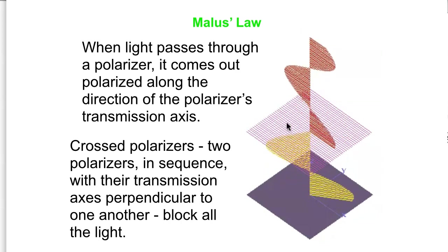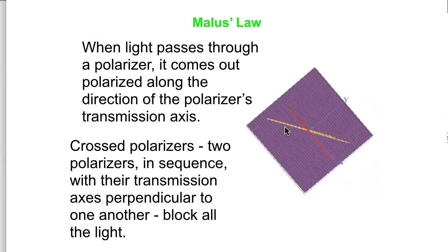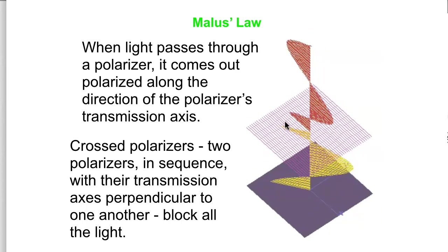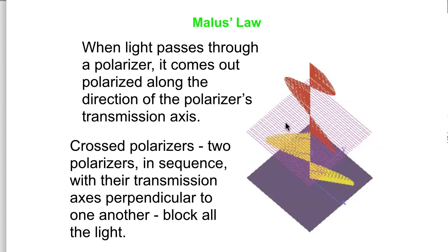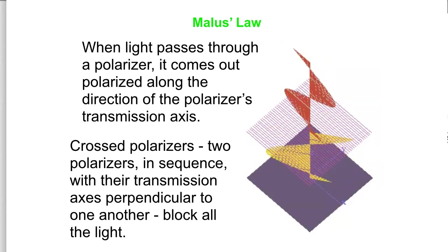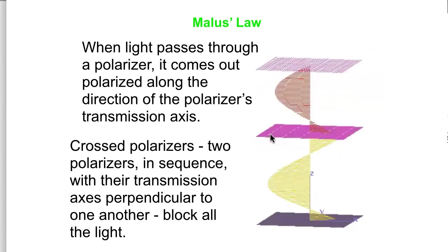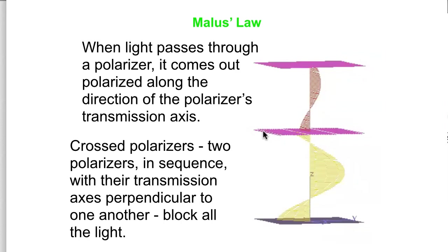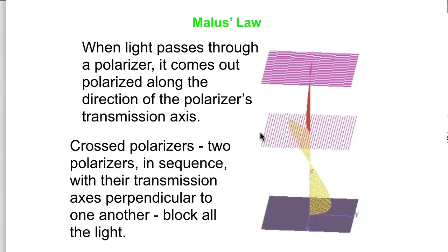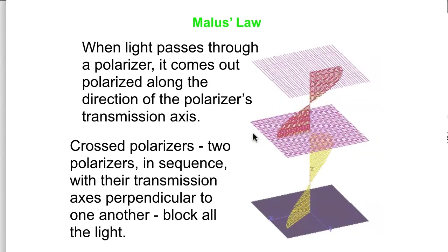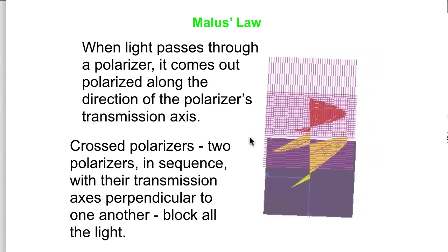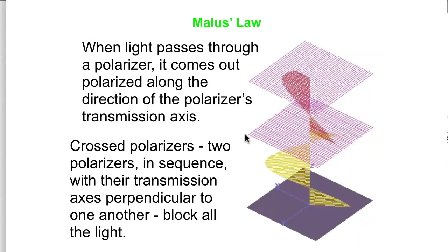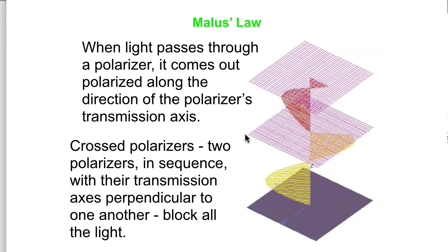This diagram illustrates Malus's Law in action. At the bottom we have some linearly polarized light, then a polarizer — you can see the transmission axis orientation. It only allows one component of the incident light through and completely blocks the component perpendicular to that direction. If we add a second polarizer at 90 degrees to the first one, then all the light gets blocked. The first one blocks one component, the other blocks the other component. This is known as crossed polarizers — two polarizers back to back with their transmission axes at 90 degrees to one another — which cuts the light down to zero.